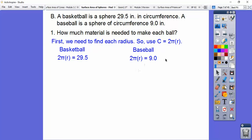So let's divide both sides by 2π, and I'm going to do these two problems simultaneously. And then use a calculator, and so we get about 4.695 is the radius of the basketball, and about 1.432.